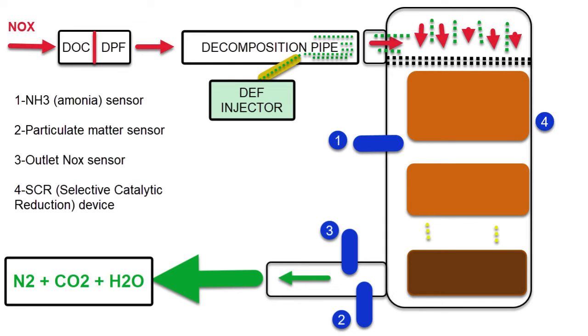The particulate matter sensor number two has the ability to regen itself. It's got a heating element in the tip that can raise the temperature hot enough to clean any soot out that gets trapped in there. If enough soot gets trapped in there, it'll start logging faults. I have not seen that on any of our vehicles as of yet. There is a test and insight you can do to force a regen on that sensor. If it doesn't need it, it'll tell you when you try to execute the test that it's not required.